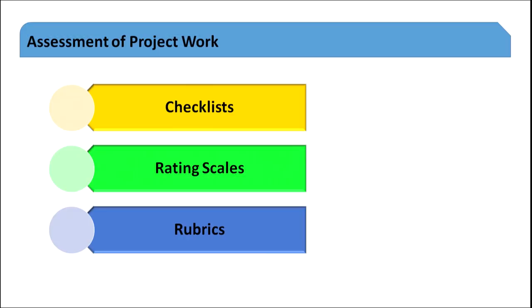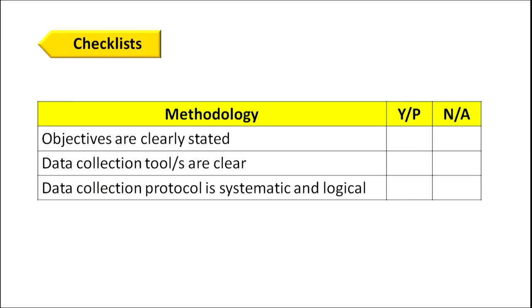Assessment of projects is very important for teachers. There are three types of tools: checklist, rating scales, and rubrics — they are not the same, they are different. A checklist uses a simple illustration — for example, methodology: are objectives clearly stated? Are data collection tools clear? Is the data collection protocol systematic and logical? The answer is yes or no — present or absent, true or false.